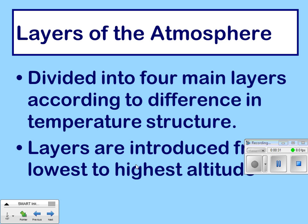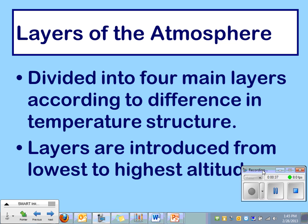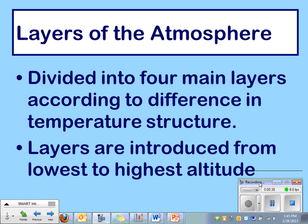The layers of the atmosphere are divided into four main layers according to the difference in their temperature structure. The layers are introduced in the notes from the lowest to the highest altitude, so as soon as you walk outside, that's the lowest one — that's what we're going to start with.